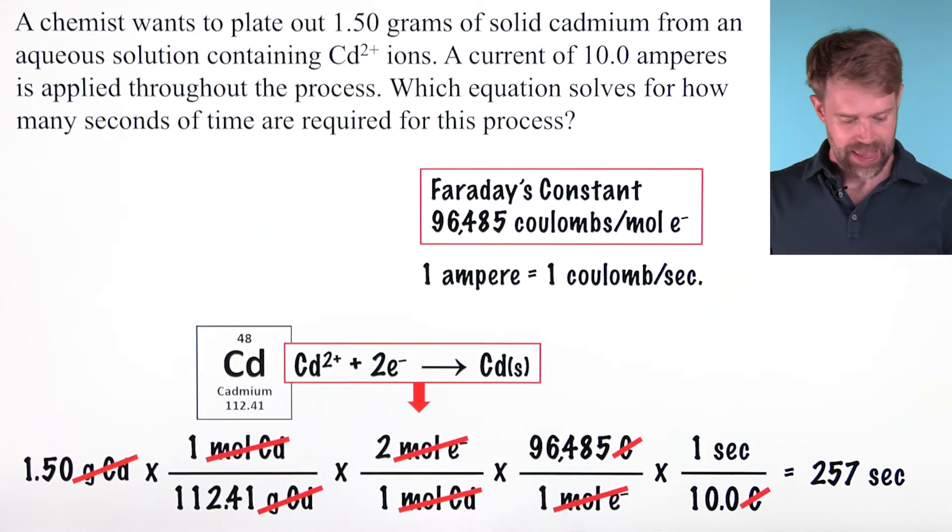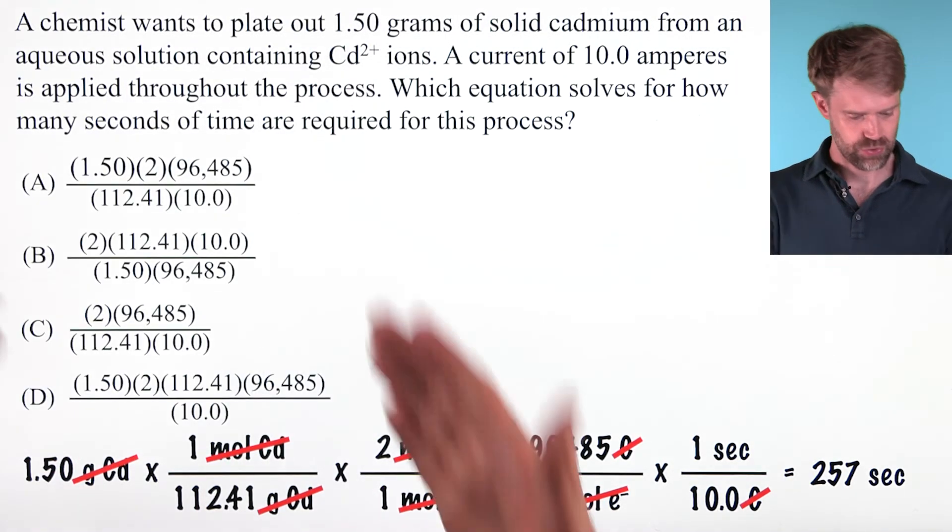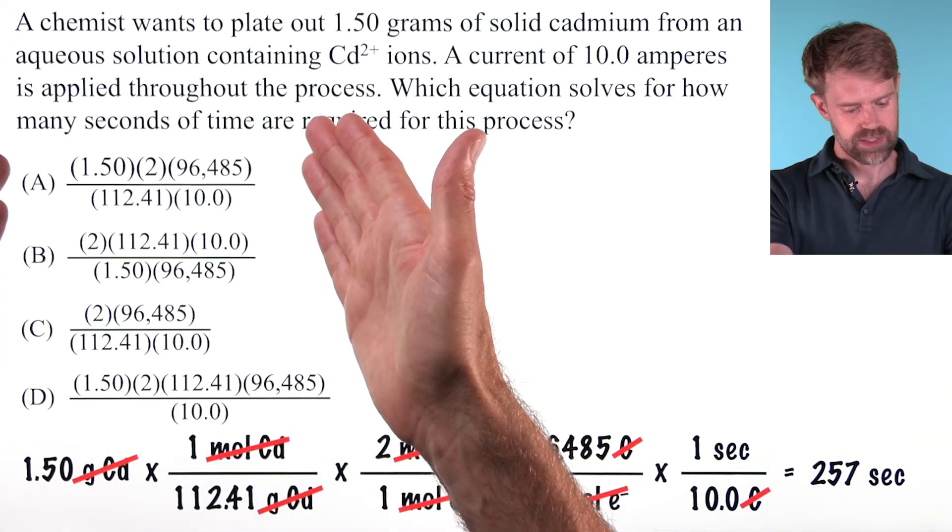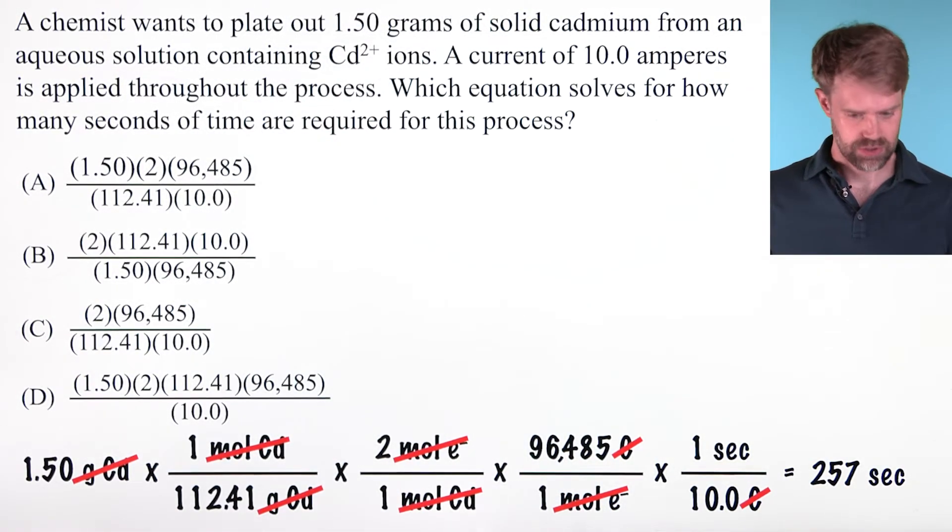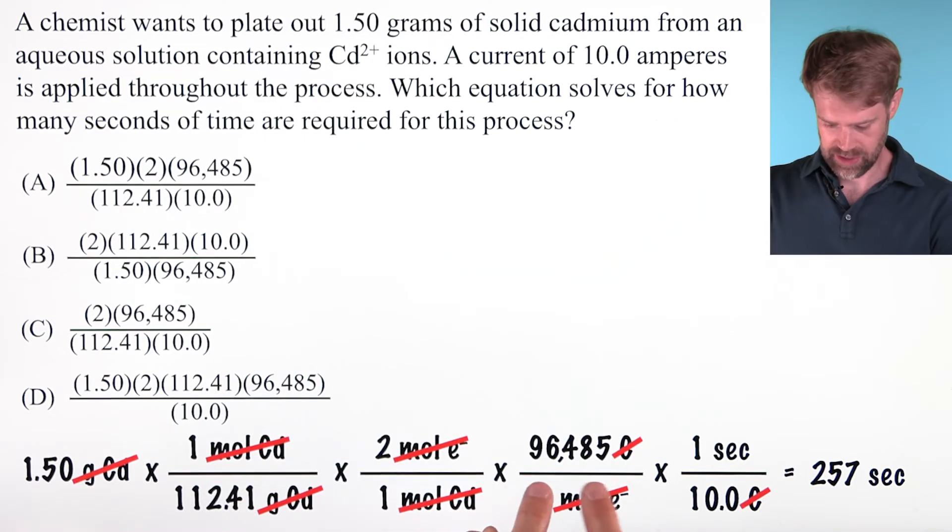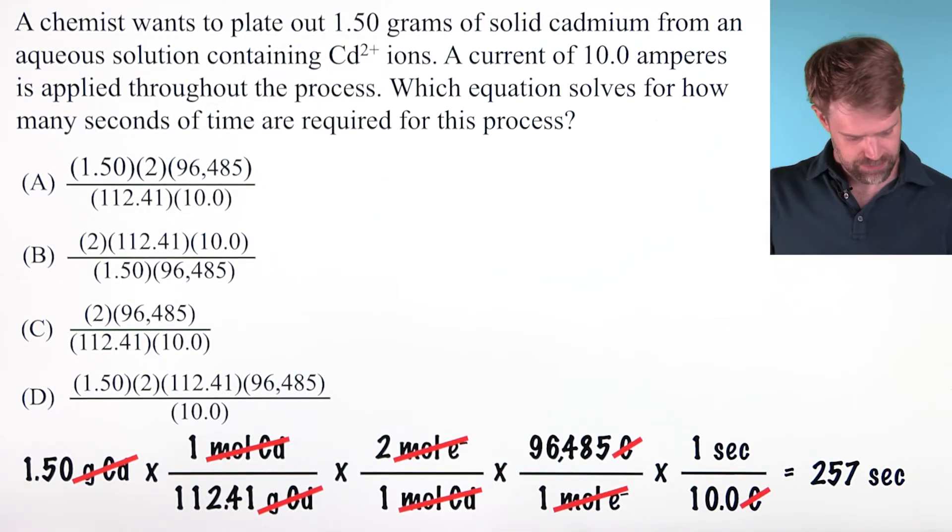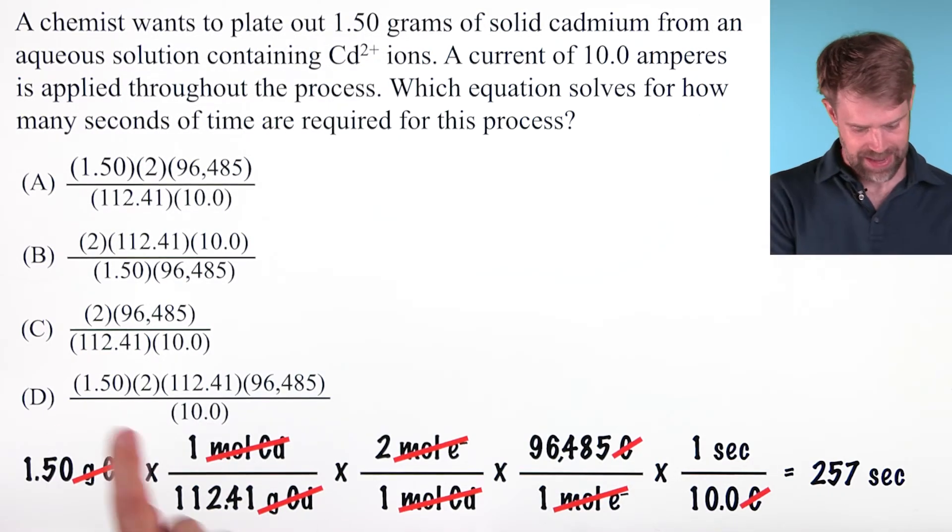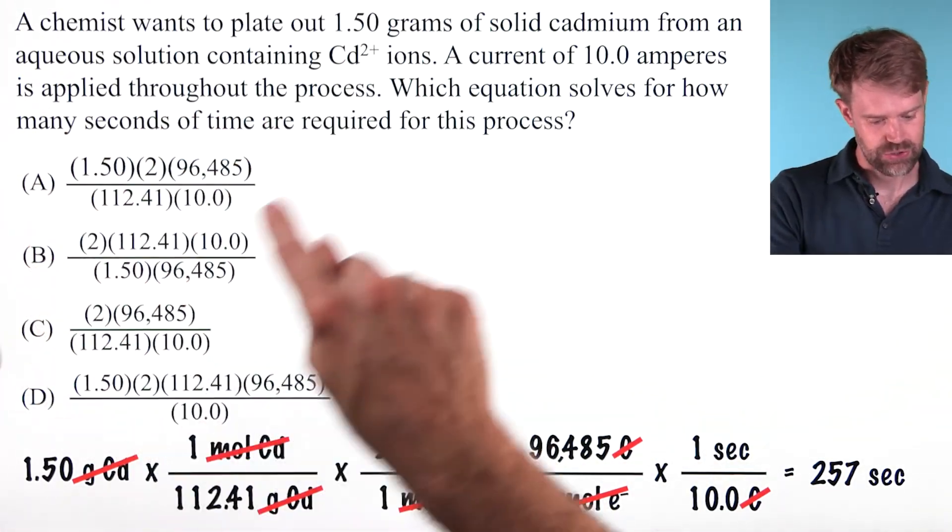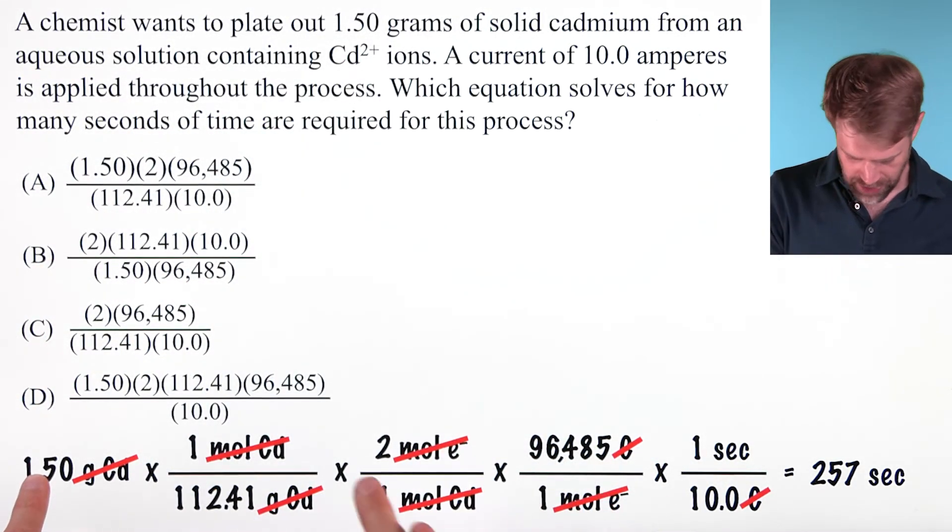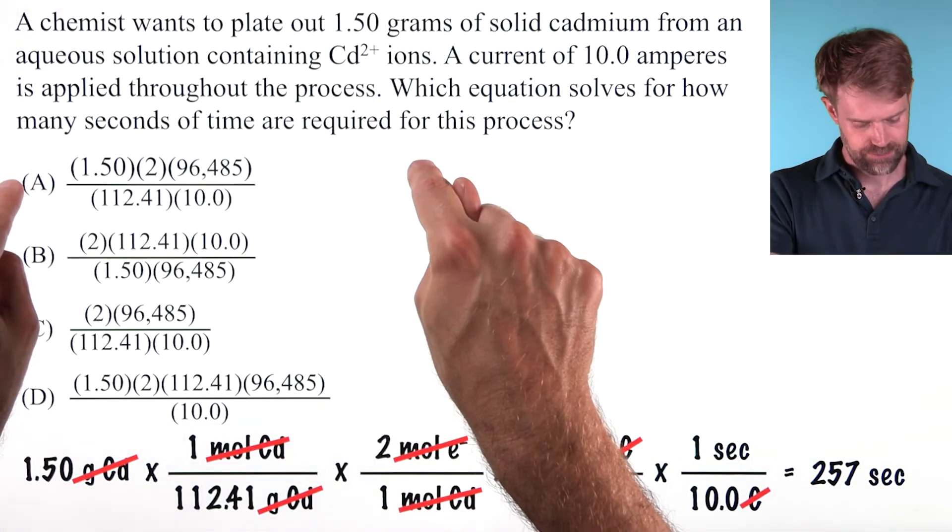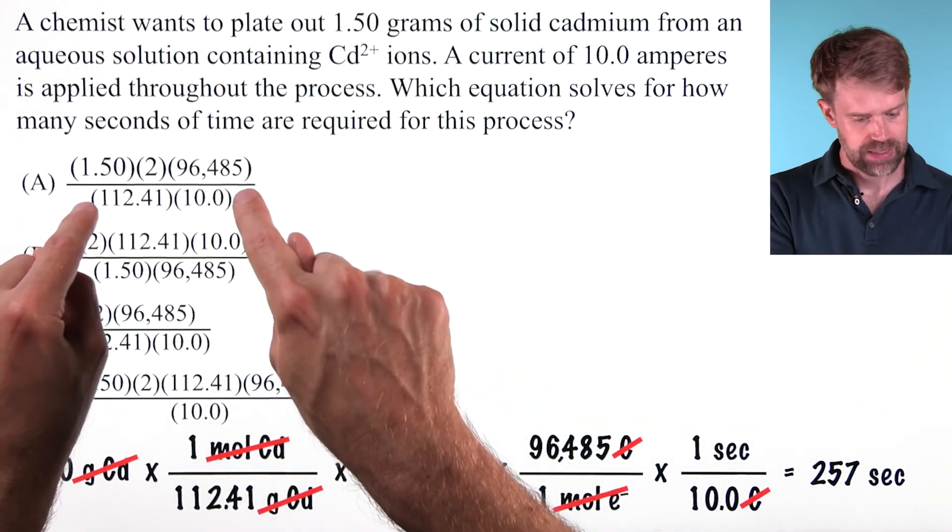If we had to do the math we'd end up with 257 seconds, but you don't have to do that. If you look at the answer choices, all it does is set up the math and ask which one is correct. The math is going to be 1.50 times 2 times 96,485 divided by 112.41 times 10, and this corresponds to answer choice A. Everything on the top of the fractions is on the top, everything on the bottom of the denominators is on the bottom.